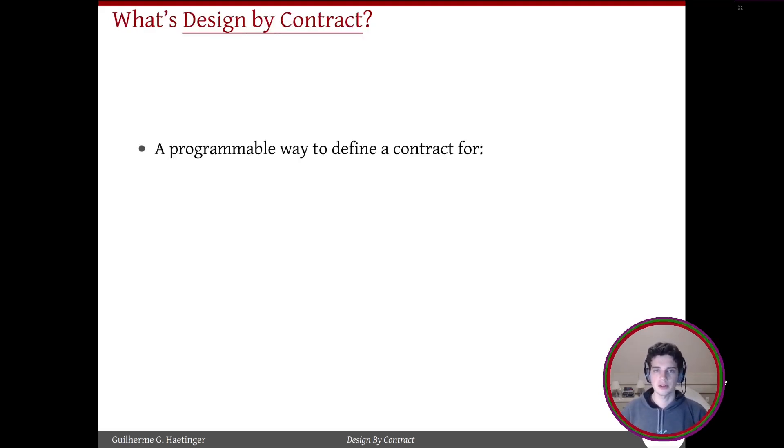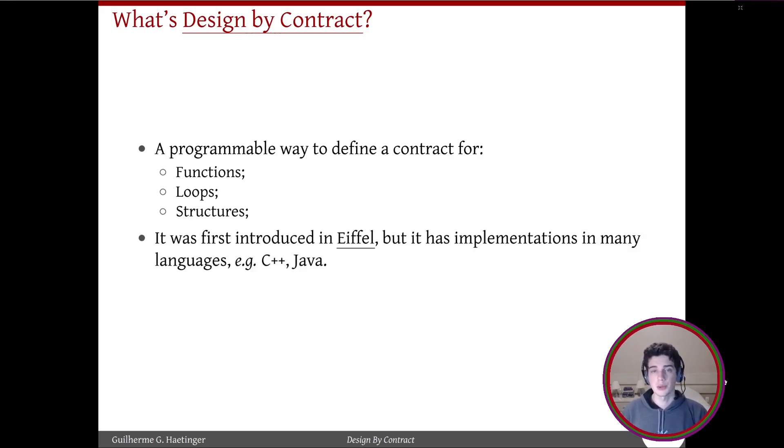So what is Design by Contract? Design by Contract is just a programmable way of doing so, of adding assertions to your code. To functions, to loops and to structures. It was first introduced in Eiffel and then it moved on to branching out to other languages as well as C++ and Java.